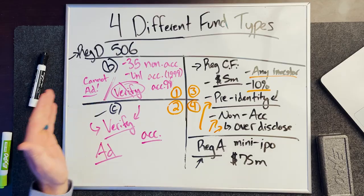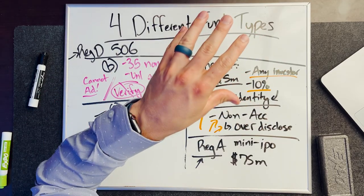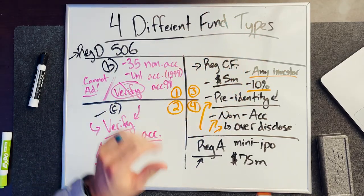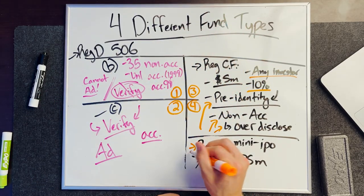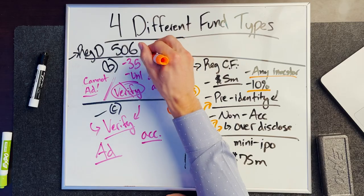So back to the question: can I raise money from non-accredited investors? The answer is yes — you can follow Reg CF, Reg A, or take 35 non-accredited investors under a 506B. However, you have to do a lot more work to make sure those investors are over-disclosed.